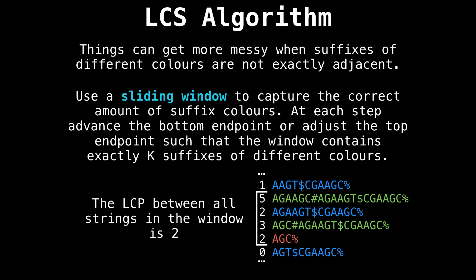Here's what we'll do at each step. We'll adjust the bottom or the top endpoint so that the window contains exactly k suffixes of different colors. Once we have a valid window with the correct amount of colors, we'll want to query the minimum LCP value for that window range. In the picture below, you can see that this value is two, because the minimum value in the LCP array for that window is two.